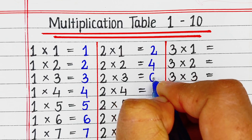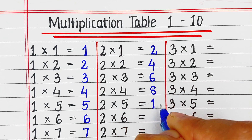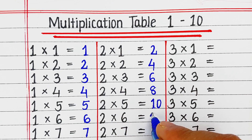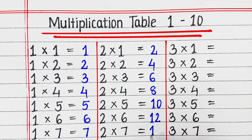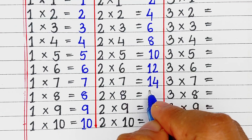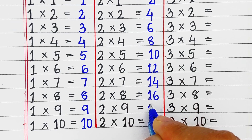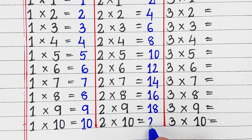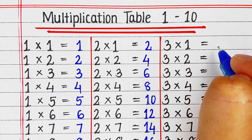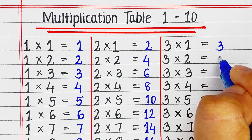Next is table of 2. 2 ones are 2, 2 twos are 4, 2 threes are 6, 2 fours are 8, 2 fives are 10, 2 sixes are 12, 2 sevens are 14, 2 eights are 16, 2 nines are 18, 2 tens are 20.